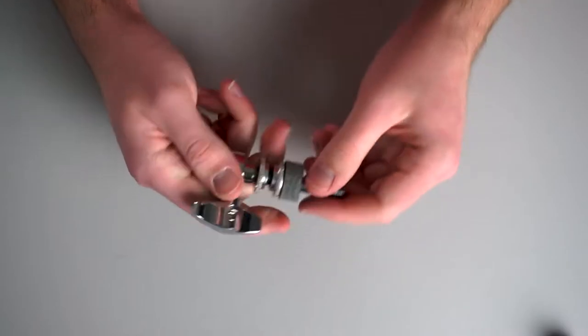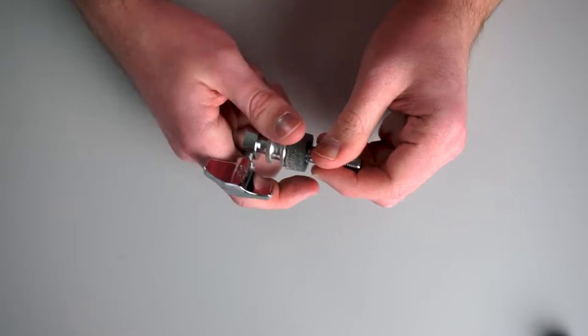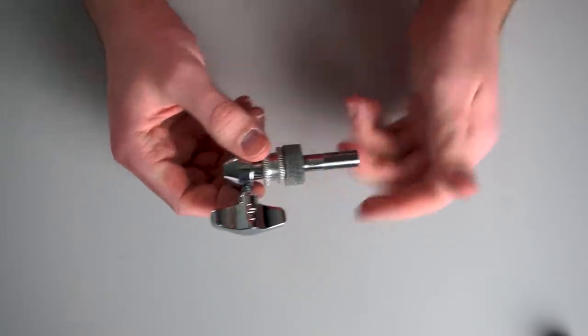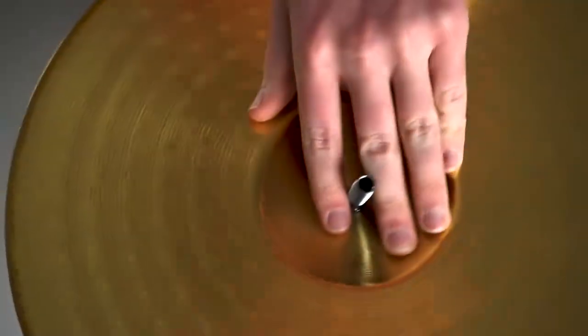Now once you've got that all off, we're just going to push these to the top so we have room to do whatever we need to on the clutch. I'm going to grab my cymbal, and we're just going to slide the assembly that we have right into the top, and we're going to flip it over.